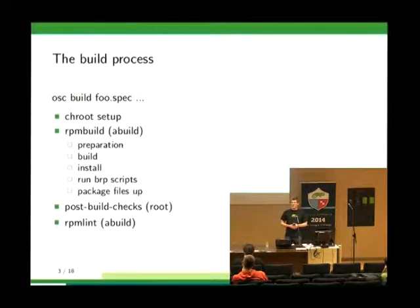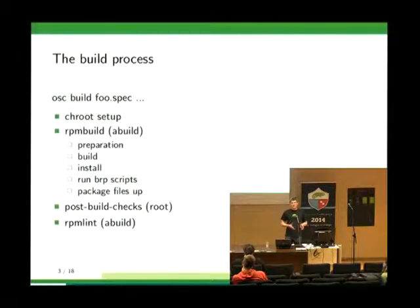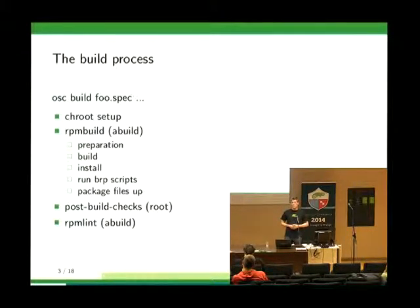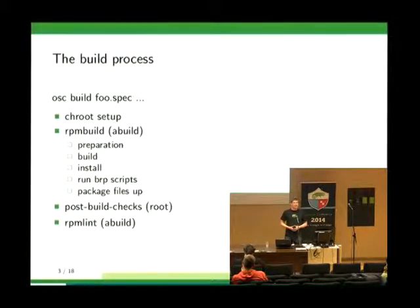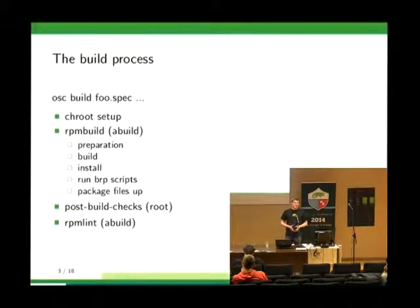Those are the BRP scripts — Build Root Policy. After those scripts, all the files you installed in the RPM root get packed as actual RPMs and written by RPM build to the output directory. When RPM build is finished, the build script calls the post-build checks, which run as root and are SUSE-specific. When those post-build check scripts are finished, RPM-Lint gets called, and RPM-Lint runs as an unprivileged user.